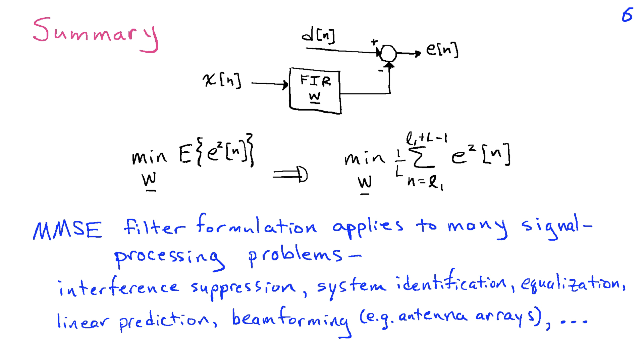This formulation applies to a lot of signal processing problems. I illustrated it for three problems here. There's quite a few more. So we looked at interference suppression, system identification, and equalization. You can also interpret things like linear prediction, beam forming for antenna arrays, and a whole host of other problems in this general construct. And so it's a powerful framework that's well worth learning about.